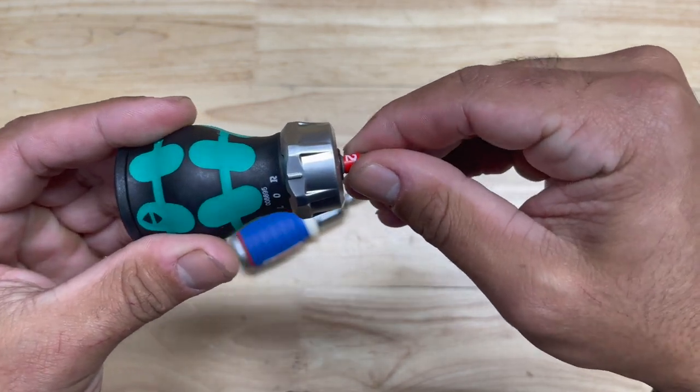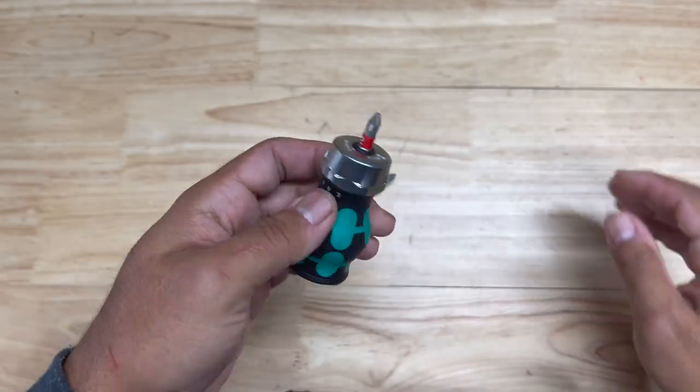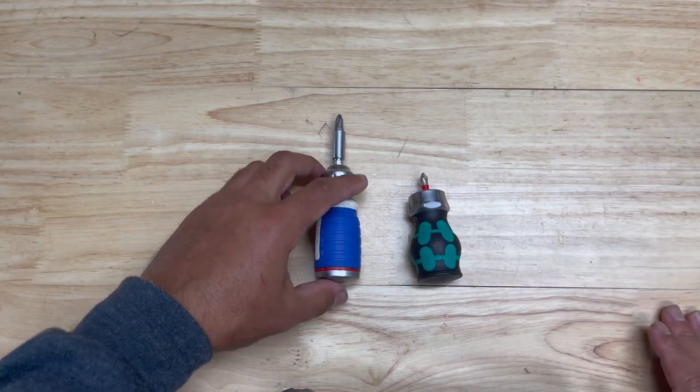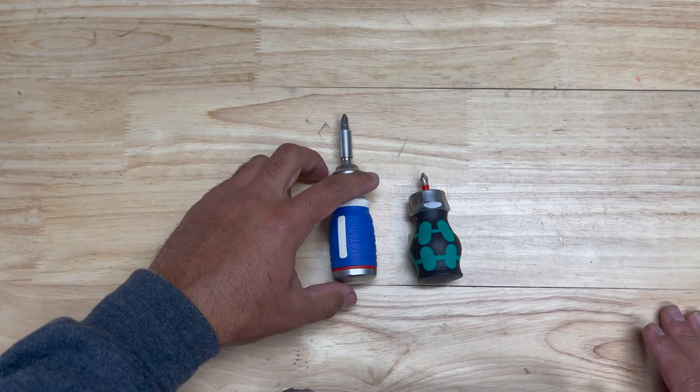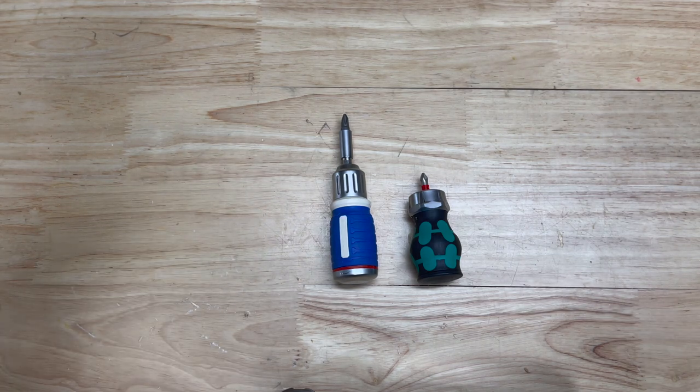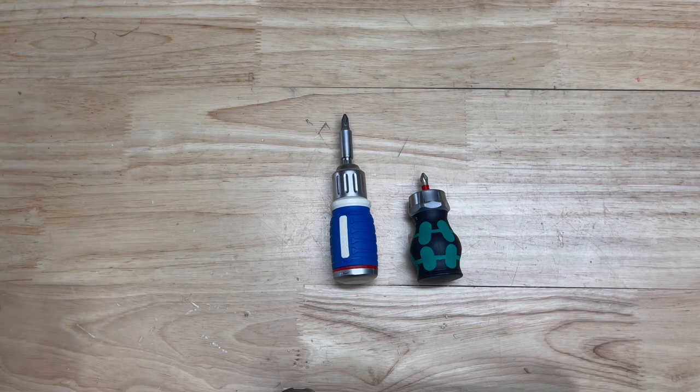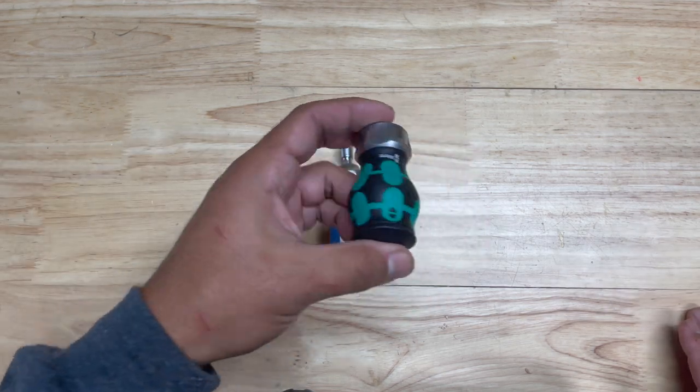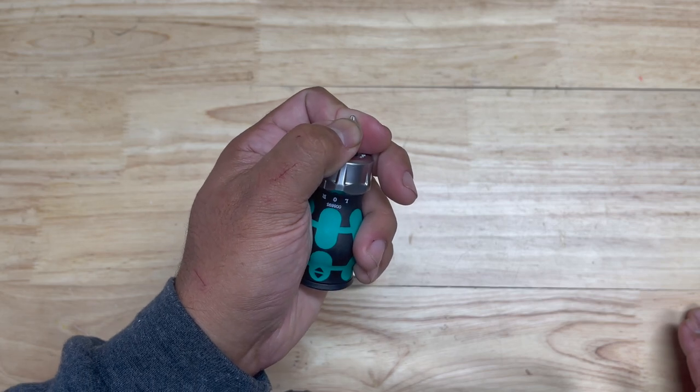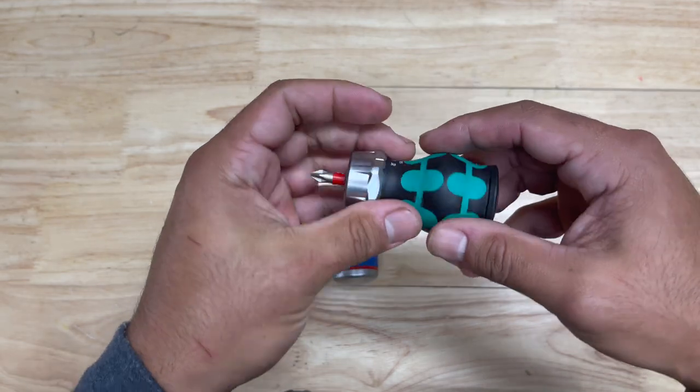The Wera is definitely much more fine and if I have to say it's much smoother. Wera's ratcheting mechanisms on all their screwdrivers are insanely smooth. I haven't tried every ratcheting screwdriver out there but in my experience I think Wera's ratcheting mechanism is probably the smoothest that I have ever used and it is just absolutely brilliant.